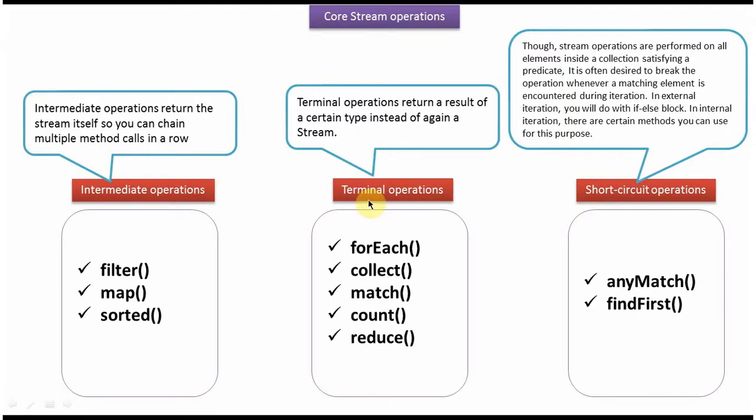Second one is terminal operation. Examples of terminal operations are forEach, collect, match, count, and reduce. Terminal operations return a result of a certain type instead of again a stream.